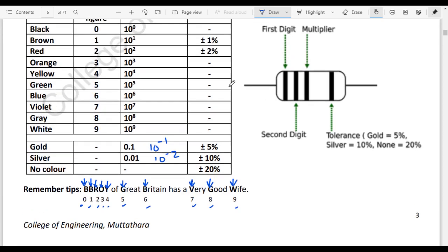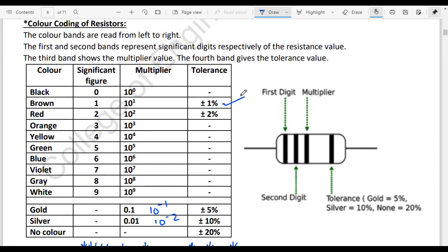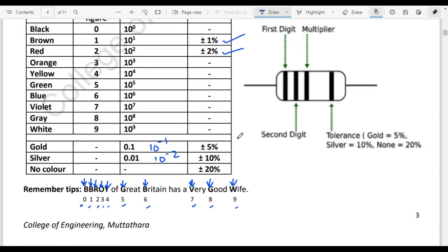Now, if you see the tolerance, the fourth band is brown, plus or minus 1%, red plus or minus 2%, gold plus or minus 5%, silver plus or minus 10%, and no color plus or minus 20%.